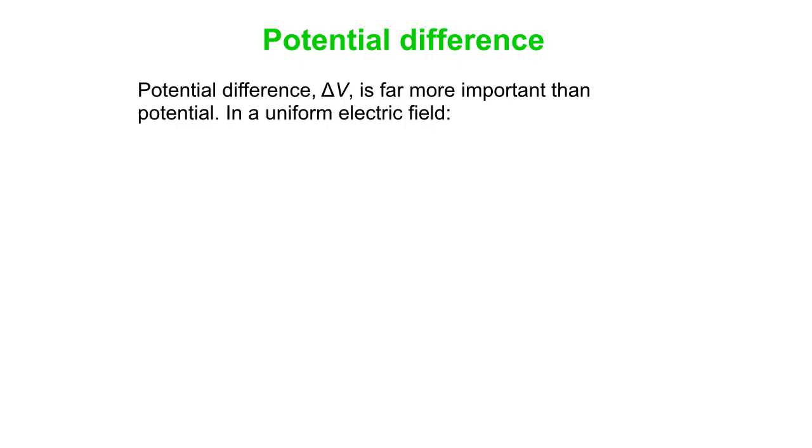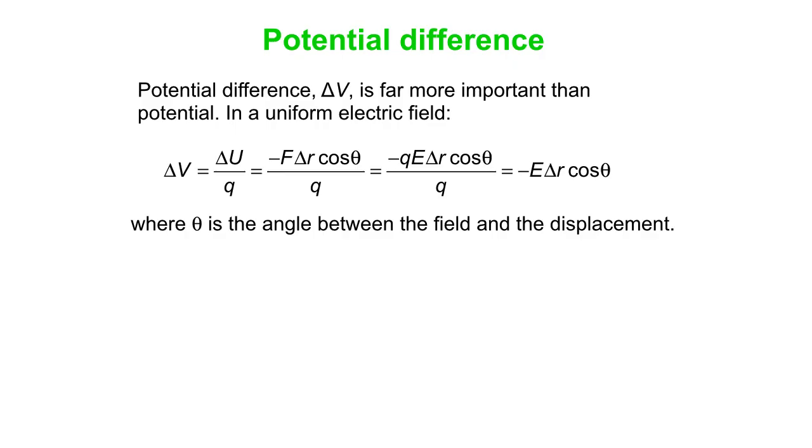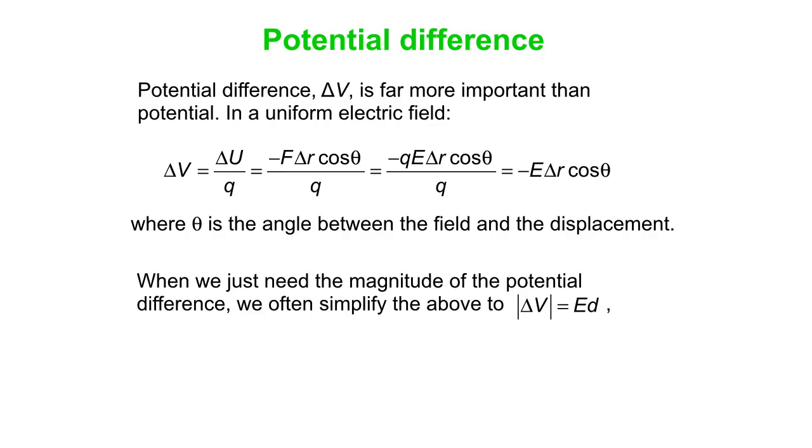Potential difference can be far more important than potential. In a uniform electric field, delta V is delta U over q. The change in potential energy is the negative of the work, so that's minus F delta r times cos theta over q. F, of course, is qE in this case. So you can boil this down to minus E delta r cosine theta, where theta is the angle between the field and the displacement. When you just need the magnitude, you can simplify and get delta V is ED, where D is the distance moved parallel to the field.